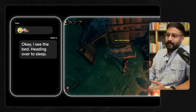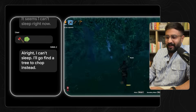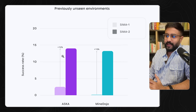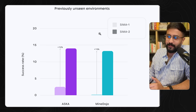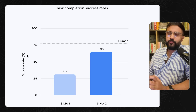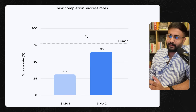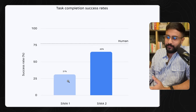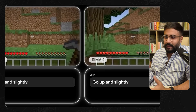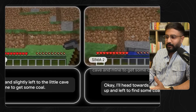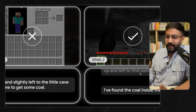You can also give instructions in emoji — something like 'sleepy time, go find the bed' — and it responds it can't sleep right now. Tell it 'go chop some wood' and off it goes, starting to chop wood. What's particularly cool is it's not trained on a bunch of these environments like Minecraft or MineDojo. There's a huge difference in success rate between SEMA 1 and 2 — about a 13% increase in MineDojo. Looking at task completion rates based on human evaluators, humans are at roughly 75% success. Between SEMA 1 and SEMA 2, there's a huge jump from 31% to 65%. In a side-by-side comparison in MineDojo — 'go slightly left to the left cave and get some coal' — SEMA 1 is confused, whereas SEMA 2 just finds it and mines the coal.